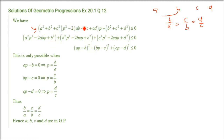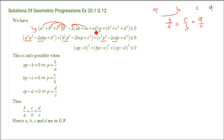Expanding: we get A²P², then −2ABP, then B². Similarly B²P² and C²P² from the other brackets. Grouping, the first bracket becomes (AP − B)², the second becomes (BP − C)², and the third becomes (CP − D)².